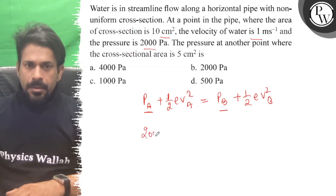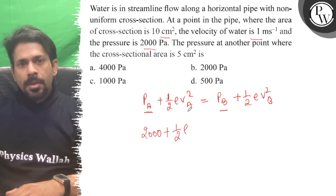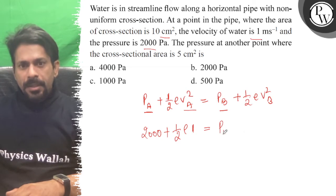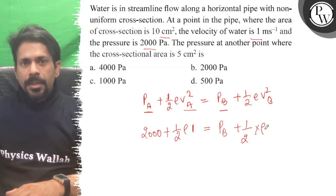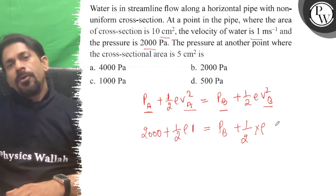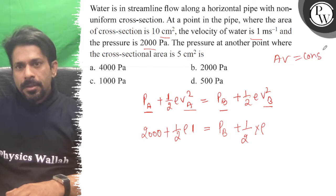Let's see here. 2000 plus 1/2 rho into va². This velocity is 1 meter per second. That equals Pb plus 1/2 into rho... Here the area is 5 cm², so the velocity... because area into v is a constant, v is proportional to 1 over the area.